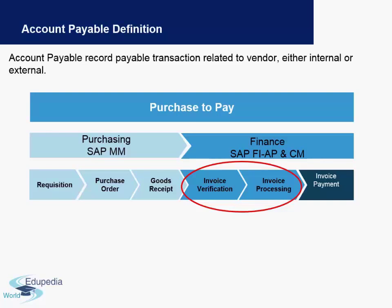On the SAP MM side, concepts like material number, vendor number, and purchase order number are very important. But when these move to Finance, the GL account — the reconciliation account of the particular vendor — becomes very important, because that is what is used at the invoice stage. If there are any taxes, the tax GL account is triggered at the invoicing stage. Lastly, at the invoice payment stage, the reconciliation account is set off against the money paid to the vendor, i.e., against your bank account.